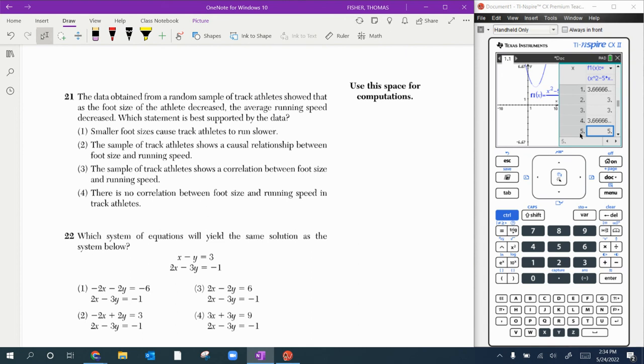21 here. Let's see what we've got. Data. Average running speed decreased. The foot size decreased. So what's the relationship? So if we're looking at this, I like to make a picture. So we're talking about foot size and speed. Some kind of scatter plot. So as the foot size decreased, the average running speed also decreased. So it's kind of weird how that's said. If it's decreasing with decreasing, that's actually the same thing as increasing with increasing. As one goes up, the other one goes up. So if it goes down, they both go down. Smaller foot sizes cause - you've got to be careful with cause. We really don't know cause. Sample shows a cause relationship. How do we know cause? Cause is one of the hardest things to prove. That's what we have science for.